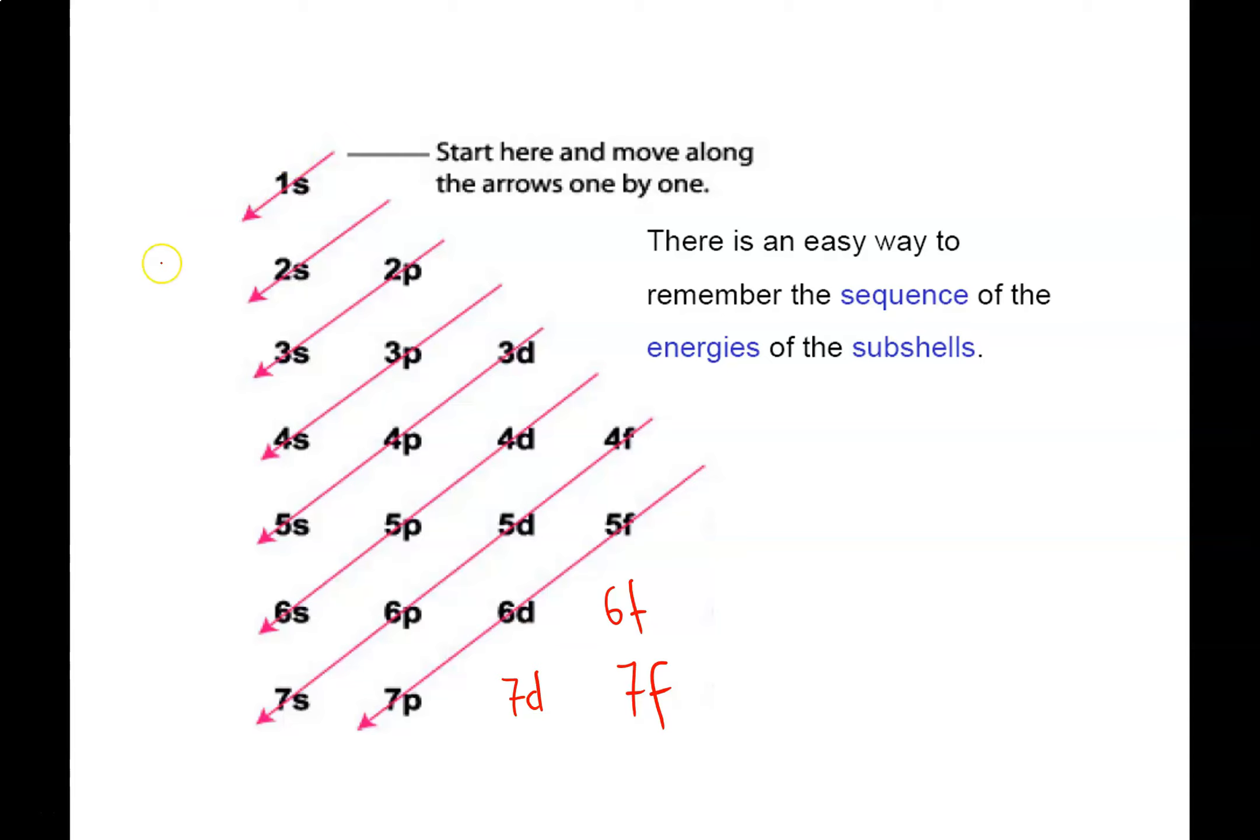Then you put these diagonal arrows in. What happens is you start placing electrons into these subshells. When you get to the end of an arrow, you go and start the next one. This diagram prompts us that we would fill the 4S, and then we fill the 3D.